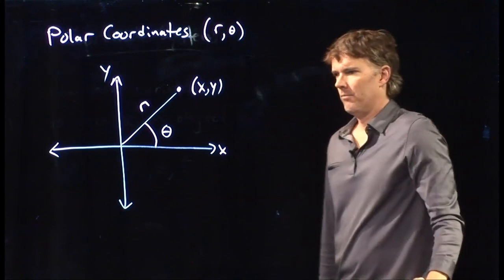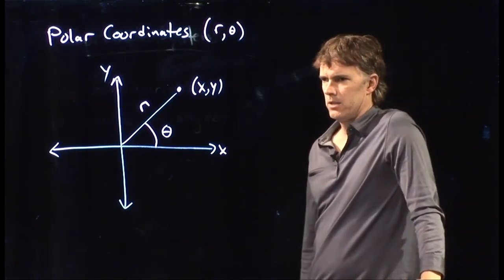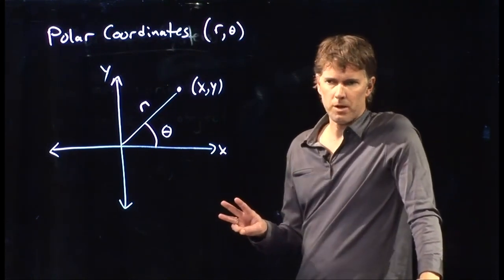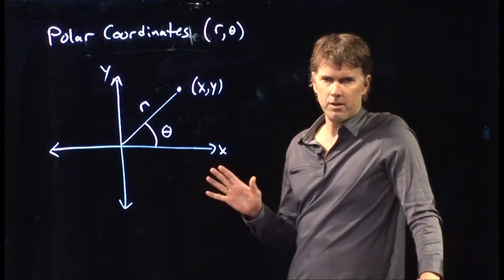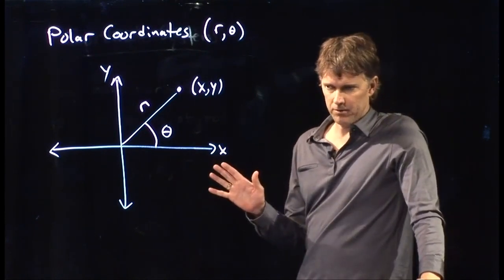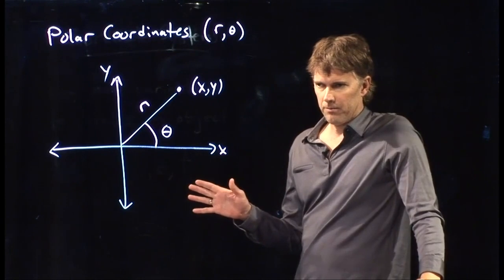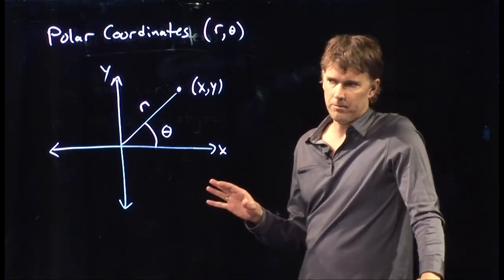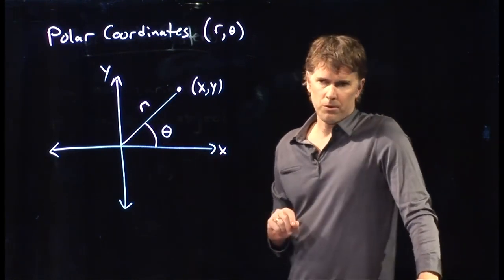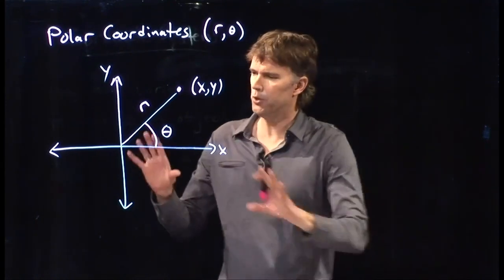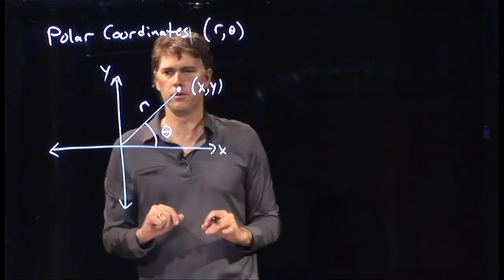To be technically correct, the three coordinate systems that you need to worry about as you go further in physics are the Cartesian coordinate system, cylindrical coordinate system, and spherical coordinate system. And this would correlate more towards the spherical coordinate system. But in two dimensions we call it polar coordinates.